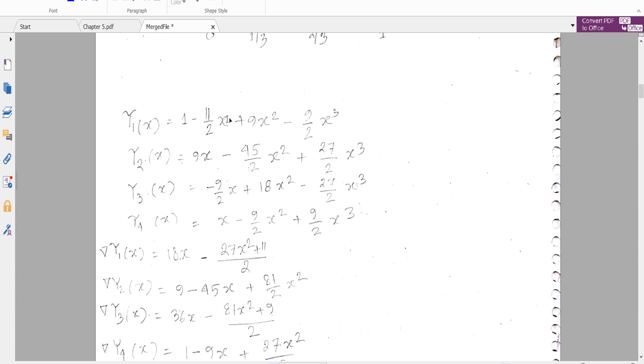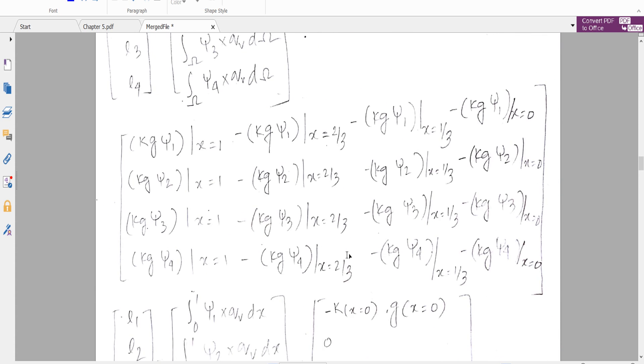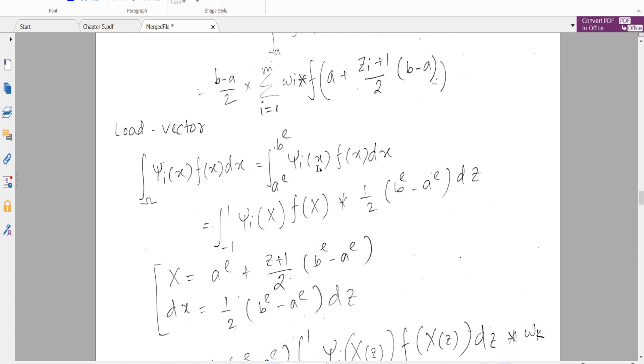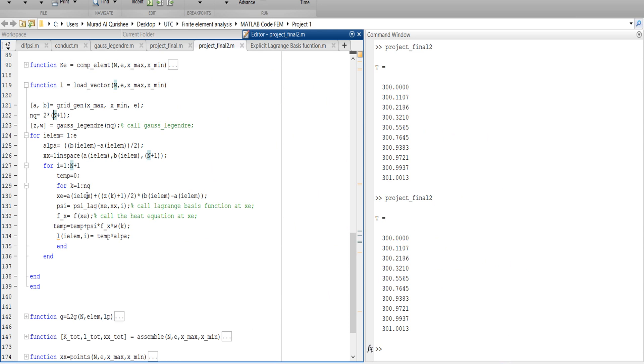So you see that each Lagrange basis function depends on the X value. That means we will replace the X value with X_e from Gauss legendary. We have X_C and W_K, this comes from Gauss legendary.